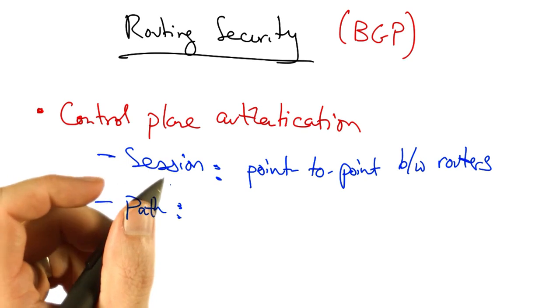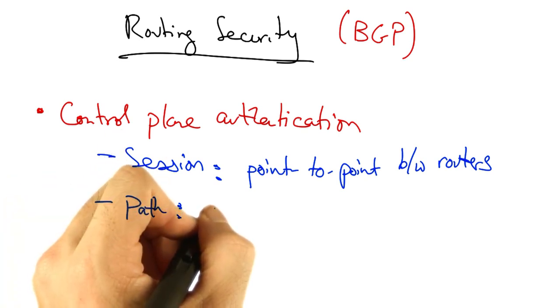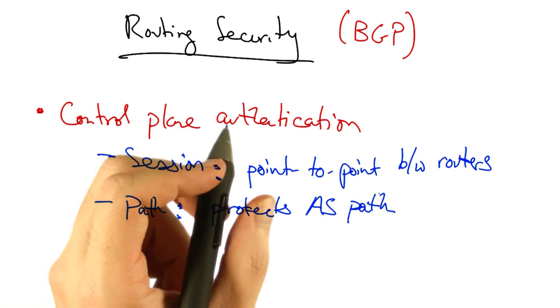A second type of control plane authentication is path authentication, which protects the AS path, and sometimes other attributes.